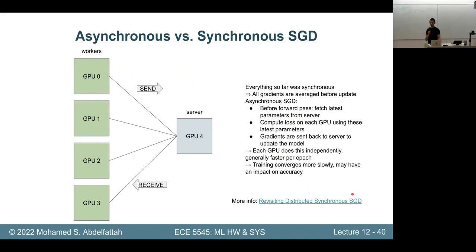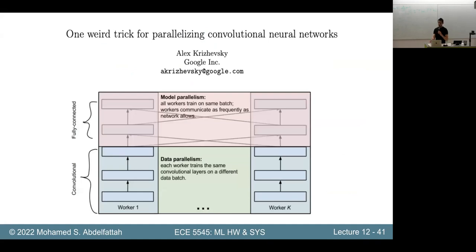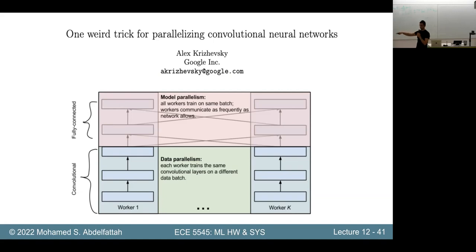Asynchronous SGD typically converges much more slowly or loses some accuracy, especially as you scale the number of GPUs. It's used way less in industry, though Google started with it to scale their data center workloads. People also combine model and data parallelism. For example, Alex Krizhevsky at Google used data parallelism for convolutions and model parallelism for fully connected layers — an interesting way to split computation depending on layer type.